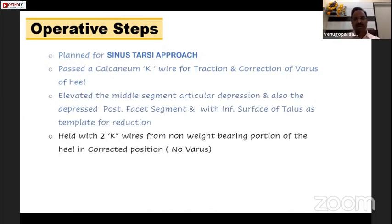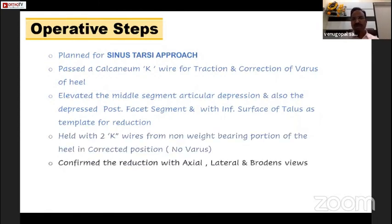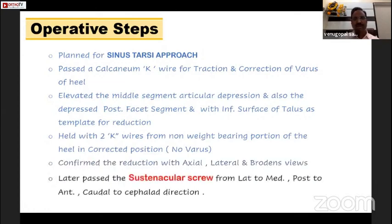After we see the reduction, we pass 2 K-wires from the non-weightbearing portion of the heel in the corrected position — confirmed that no varus is seen. This is confirmed under axial, lateral, and Broden's views. Then we pass a sustentacular screw from lateral to medial, posterior to anterior, and caudal to cephalad direction.